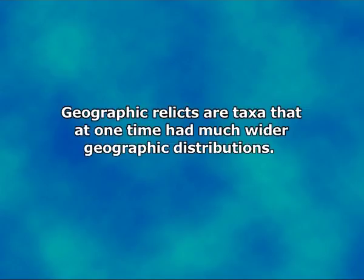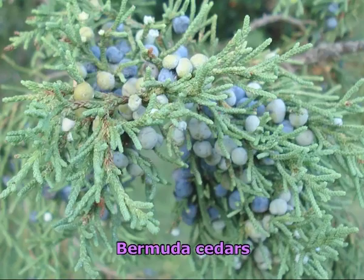Geographic relicts are taxa that at one time had much wider geographic distributions. Endemics can easily become endangered or extinct if their restricted habitat changes, particularly due to human actions including the introduction of new organisms. There were millions of both Bermuda petrels and Bermuda cedars (actually junipers) in Bermuda when settled at the start of the 17th century. By the end of the century the petrels were thought extinct. Cedars, already ravaged by centuries of shipbuilding, were driven nearly to extinction in the 20th century by the introduction of a parasite. Bermuda petrels and cedars, although not actually extinct, are very rare today, as are other species endemic to Bermuda.